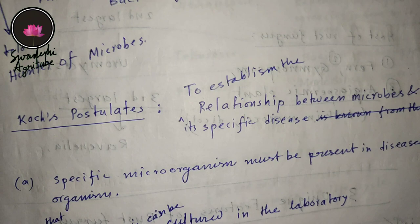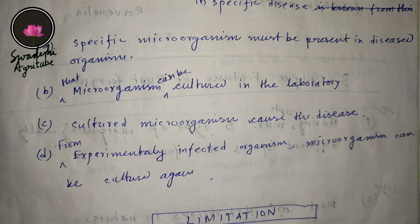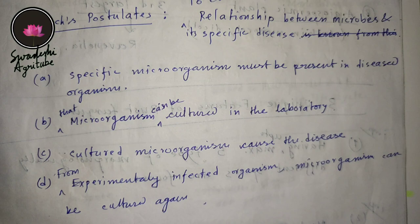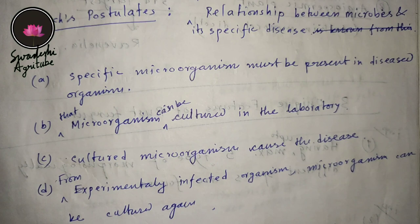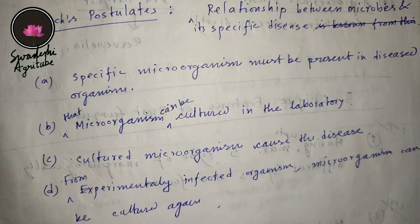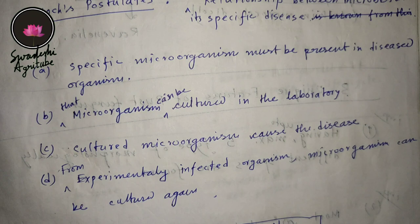The first postulate is that a specific microorganism must be present in the diseased organism. That means if you are a diseased person, if you have some disease, the responsibility is on some specific microorganism. Now we'll move to the second point: that microorganism can be cultured in the laboratory.